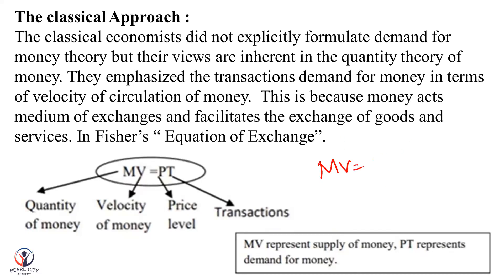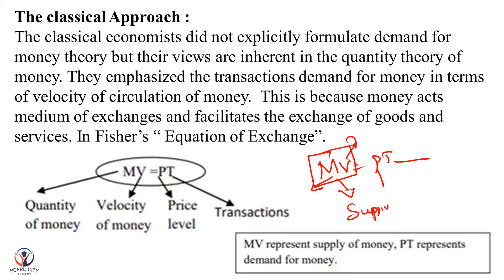MV = PT: M is the quantity of money, V is the velocity, P is the price, T is the transaction. MV together represents the supply of money; PT together we call the demand for money. This is the equation of exchange.